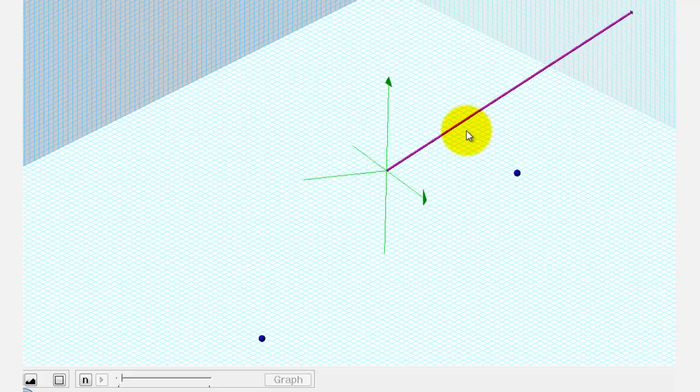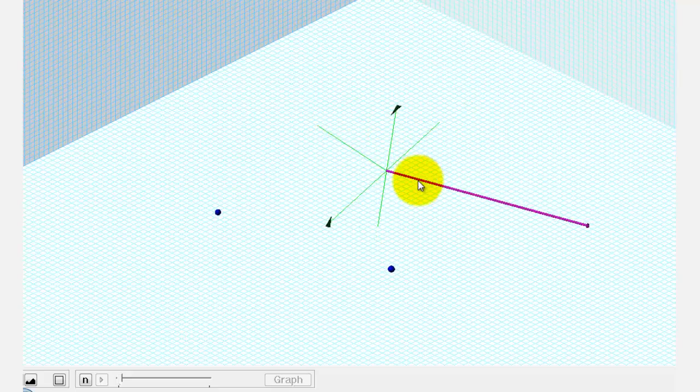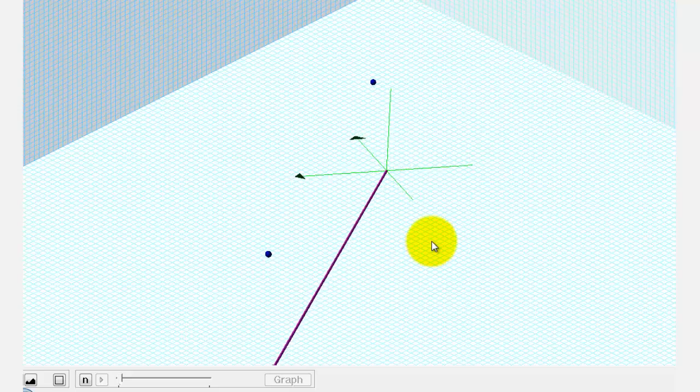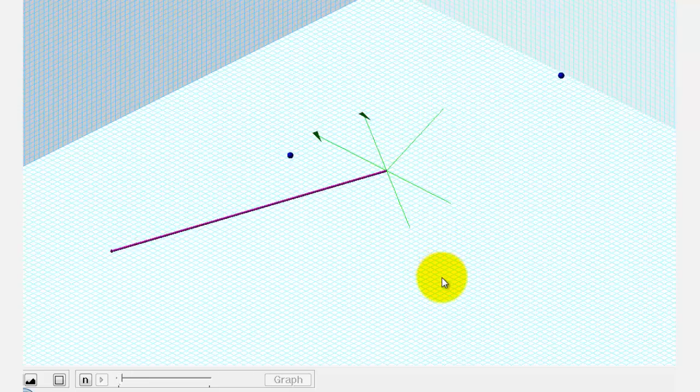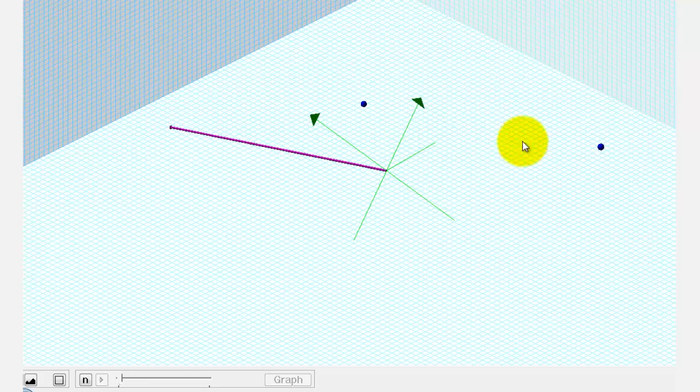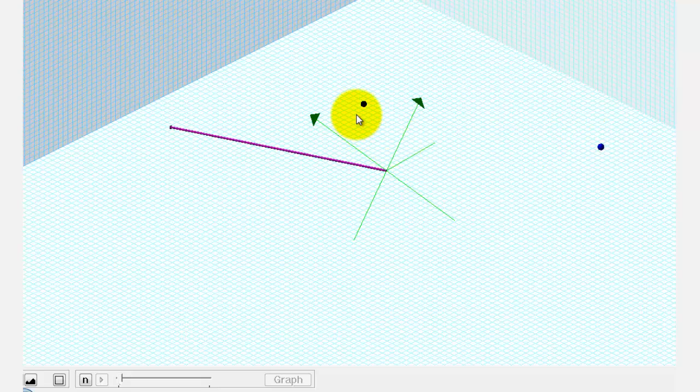To do this, we first need to find the direction vector, which is graphed here in purple. We can use the two points that we know are on the line. We can treat point A as the initial point and point B as the terminal point of our vector that's parallel to the line.